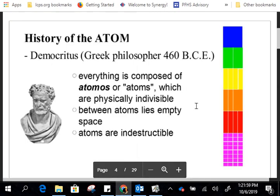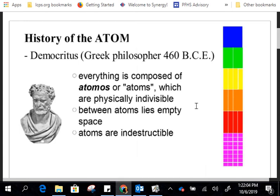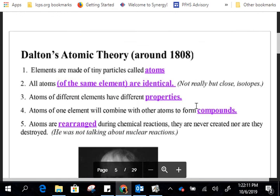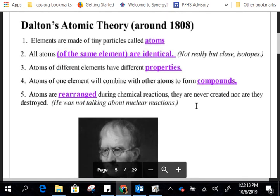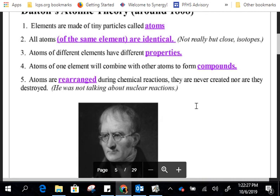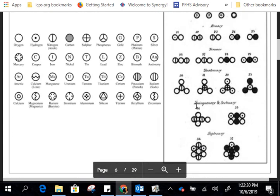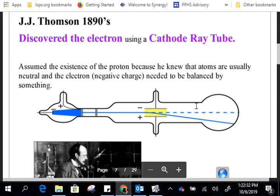So we started off the notes by talking about the history of the atom. We started off with Democritus. He was the one that came up with the idea and he said that matter is made of tiny particles that can't be broken down. He called them atomos. From there we jumped to John Dalton and his atomic theory. He had five theories that we reviewed about how atoms are the tiniest particle, that atoms that are identical are identical, atoms that are different are different, that they combine together to form compounds and during reactions they're rearranged.